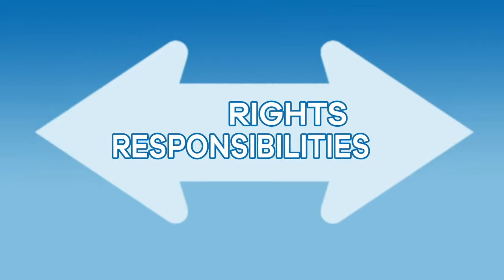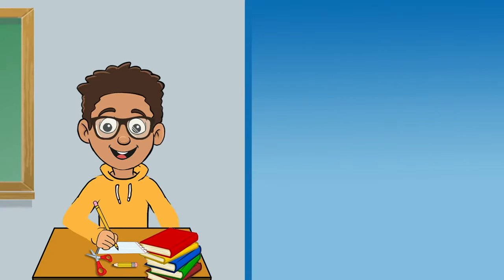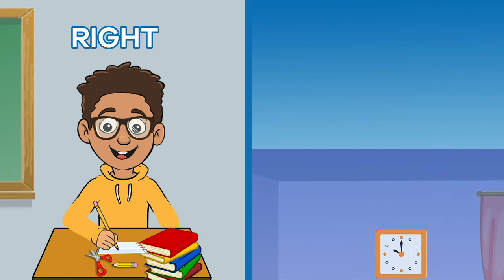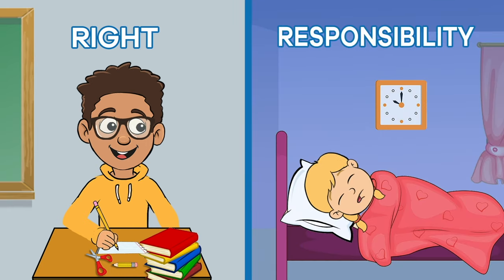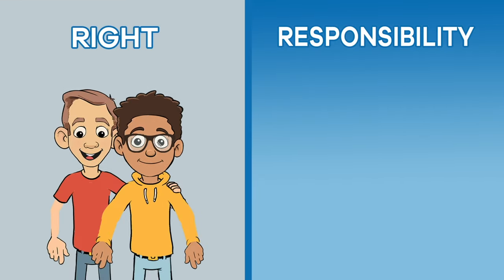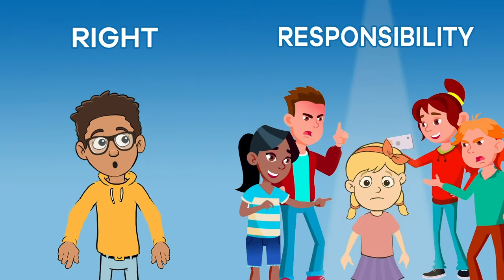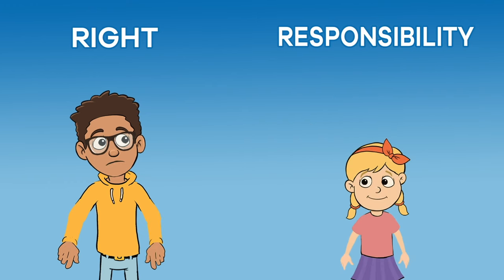Rights and responsibilities are linked to each other. For example, you have a right to attend school, but it is your responsibility to get out of bed and actually go. You have a right to be treated fairly, but you have a responsibility to speak up if you see that someone in your family or community is not being treated fairly.